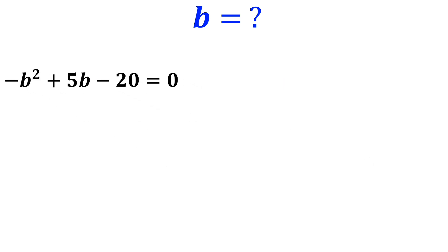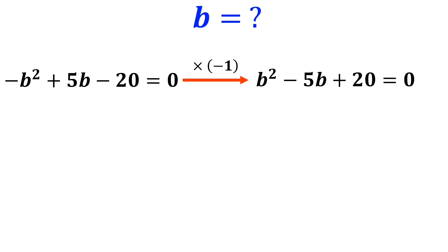To find b from this equation, we multiply the equation by negative 1, so it becomes b squared minus 5b plus 20 is equal to 0.